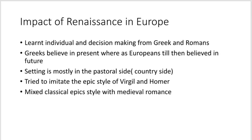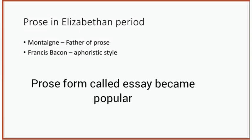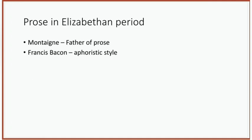Now let us talk about prose in this period. The essay as a form of prose emerged during this period. Some examples are Montaigne and Bacon. Montaigne popularized the prose form called the essay into a literary genre. He is considered the father of prose and exerted influence on Bacon, Rousseau, Hazlitt, and many others. Francis Bacon was a popular essayist famous for his aphoristic style that existed in this period.